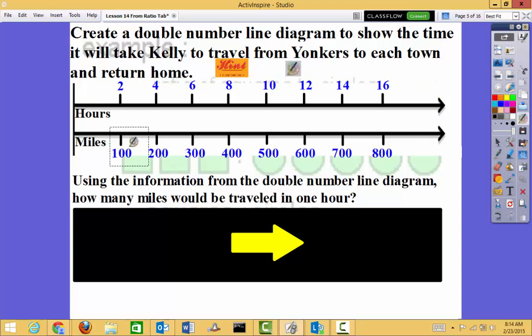And then my miles is going to be the exact same thing. So I just took that ratio table and I copied it over. So let's look. Using the information from the double number line, how many miles will be traveled in 1 hour? Well, I know 1 hour is going to be right here.